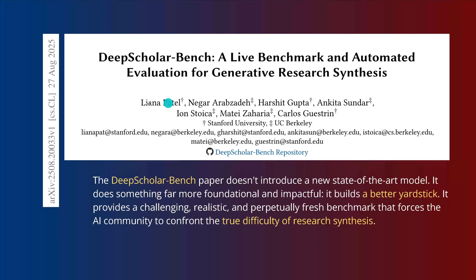Here's the paper published today, August 27, 2025: DeepScholar Bench — a live benchmark on automated evaluation for generative research systems from Stanford University and UC Berkeley. And the beauty is not just that they have a new benchmark, but what the new benchmark shows us.